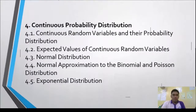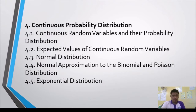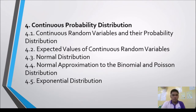The fourth topic is Continuous Probability Distributions, with five lessons: continuous random variables and their probability distributions, expected values of continuous random variables, the normal distribution, normal approximation to the binomial and Poisson distributions, and the exponential distribution.